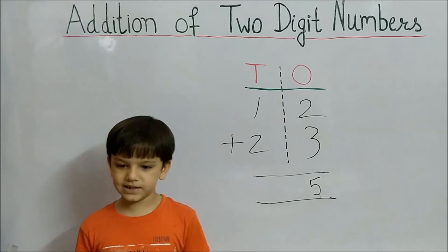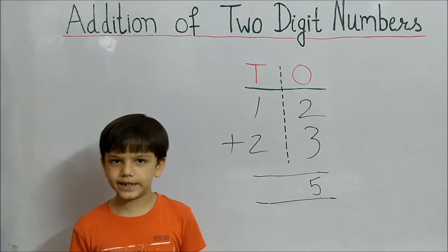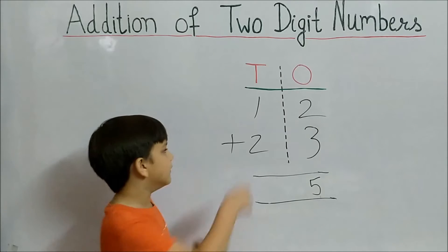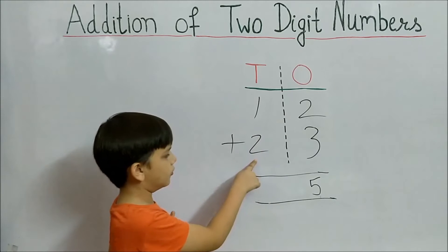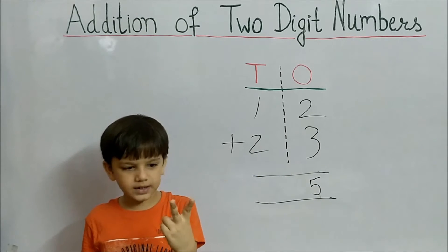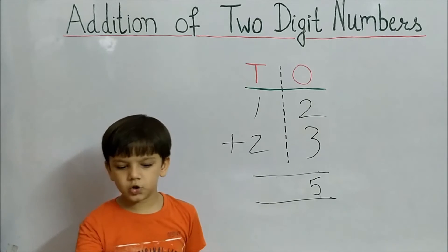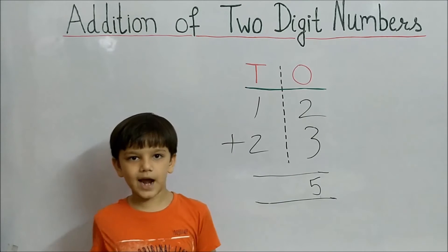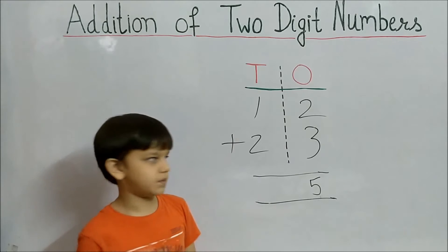Now add tens place, that means we have to add 1 and 2. So, 1 in your mind, 2 fingers up: 2, 3. So answer is 3. Write 3 below tens place.